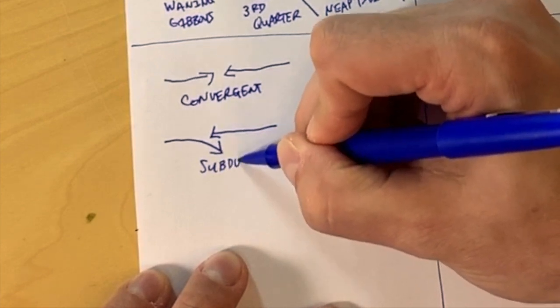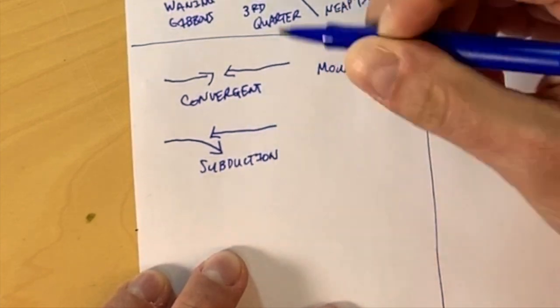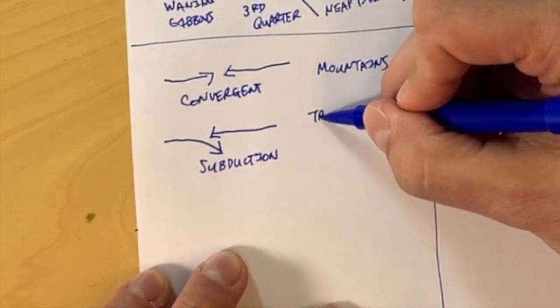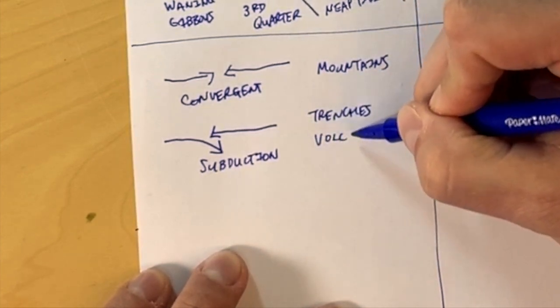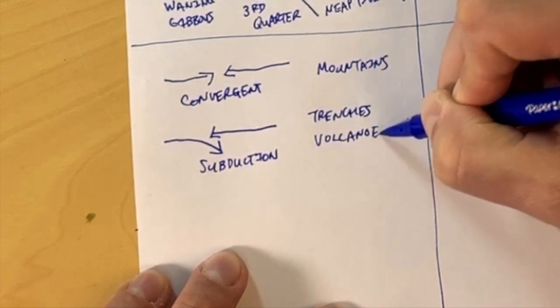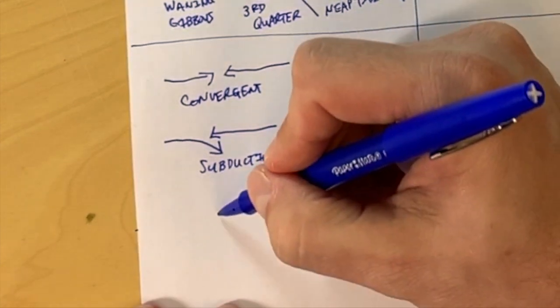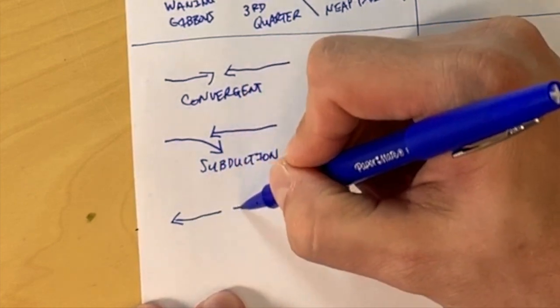They can also, if one is more dense than the other, create a subduction zone. Generally, what happens is an oceanic plate goes underneath a continental plate and it creates trenches. And the geological formation that is created on the backside of the continental plate is a volcano.